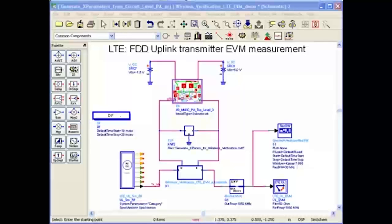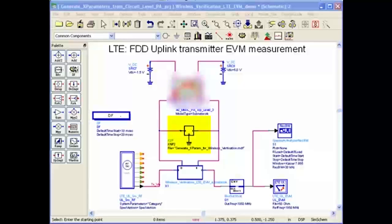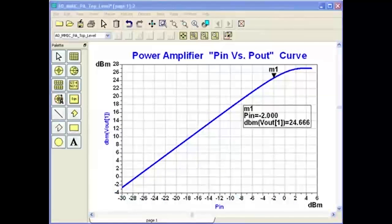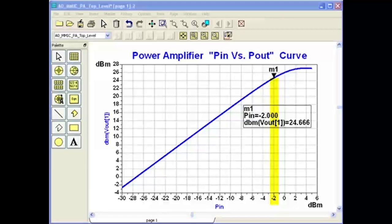Notice in this test bench I can either simulate the X parameter model by deactivating the circuit level PA or I can simulate the circuit level PA by deactivating the model. This plot shows P-in versus P-out results of the LTE PA. In order to maintain linearity, I will test the PA for EVM at input power of minus 2 dBm, which is slightly before its 1 dB compression region.